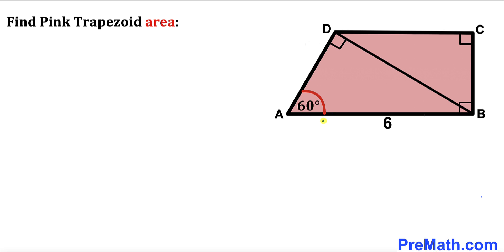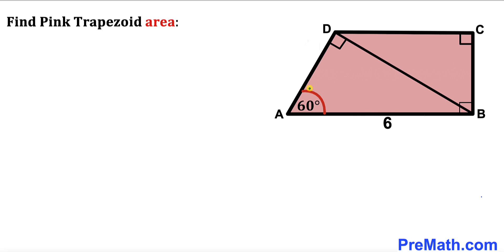Welcome to pre-math. In this video we have got trapezoid ABCD such that its side length AB is 6 units, the angle DAB is 60 degrees, and BD is the diagonal such that angle ADB is 90 degrees. Our task is to calculate the area of this pink trapezoid ABCD.